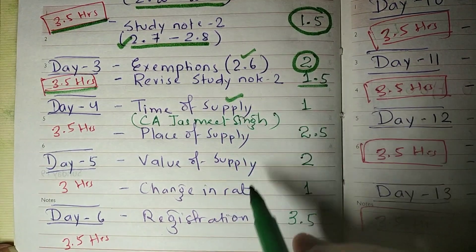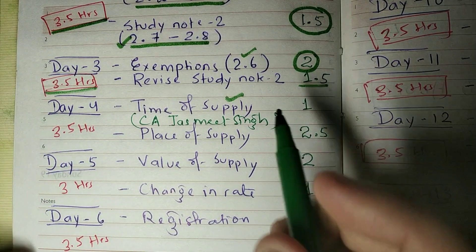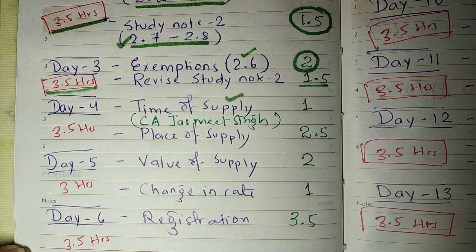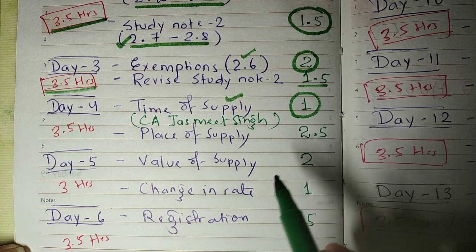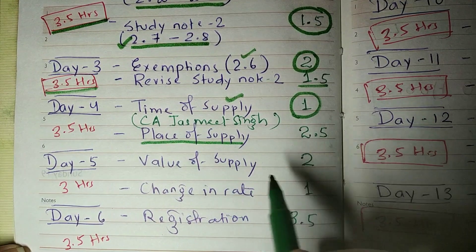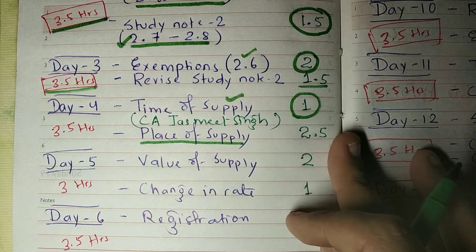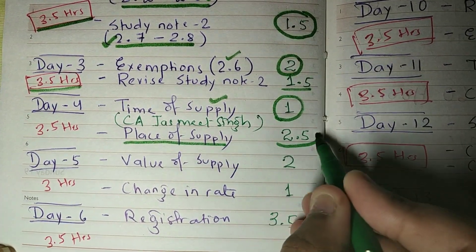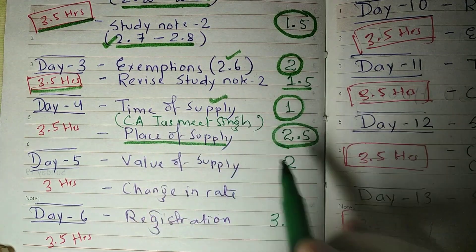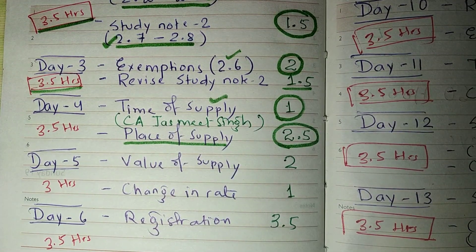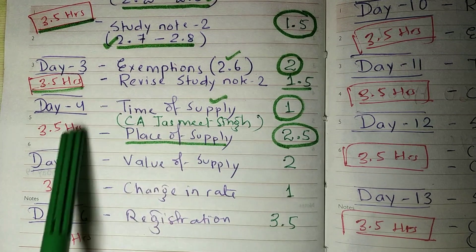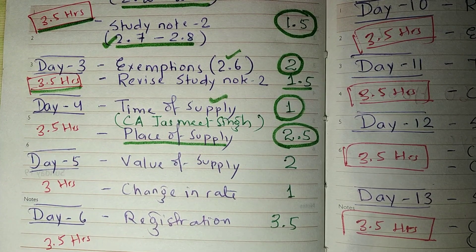From study note number 2, time of supply is a small chapter — it will take maximum one hour. Place of supply is a big and conceptual chapter and will take 2.5 hours. For revision, you can refer to CA Jasmeet Singh sir's YouTube channel — he covers place of supply and time of supply very well for CMAs.